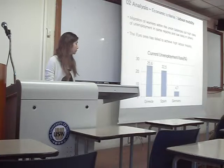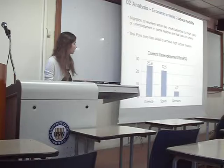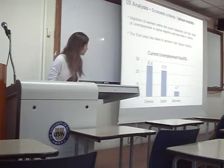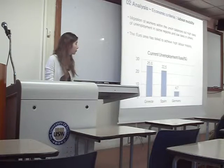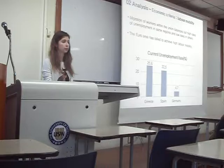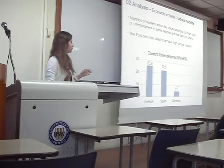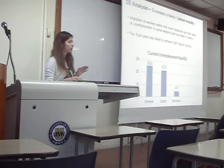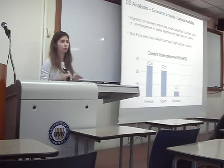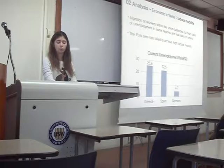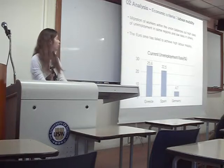These are the current unemployment rates in different countries. In Greece there is currently 25.6% unemployment, in Spain 22.5%, while in Germany it's 4.7%. If labor mobility were high across all these countries, we would see an average unemployment rate of 11.1%, which is the eurozone average.